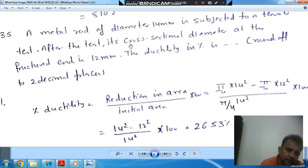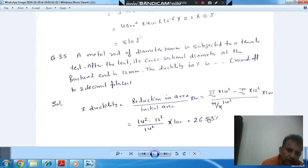So, initial diameter is 14 mm and final diameter is 12 mm. It is π/4 times 14 squared minus π/4 times 12 squared, divided by π/4 times 14 squared times 100, which equals 26.53 percent.